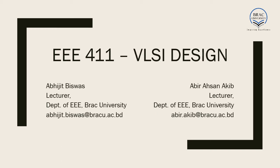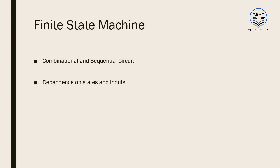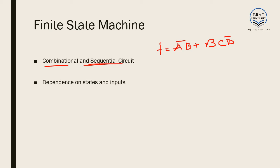Hello everyone, we have come to the very last topic of our course, which is finite state machines. Before we discuss finite state machines, we have already learned about combinational and sequential circuits. Combinational circuits have logic functions like A-bar B plus BC D-bar, while sequential circuits have a distinct feature: they involve a clock.